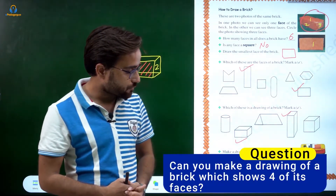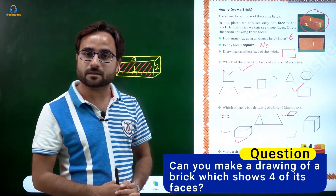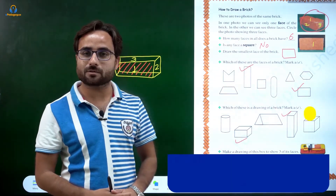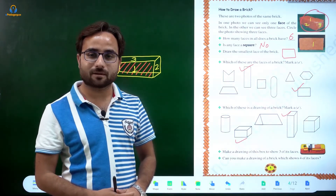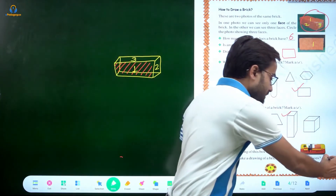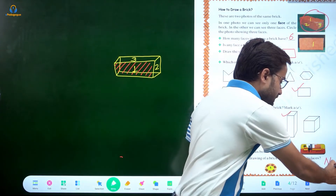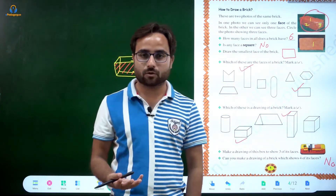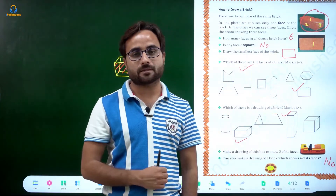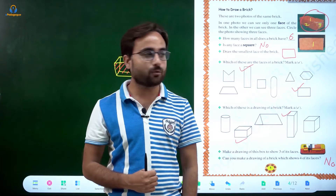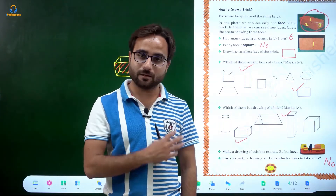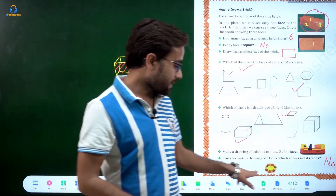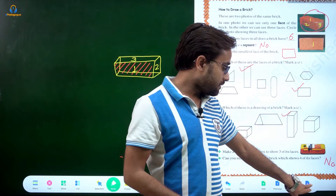Can you make a drawing of a brick which shows four of its faces? Can you see four faces at once? No, it's not possible. Only three faces maximum can be shown in a drawing. A 4D drawing is not possible — you cannot make that on paper.